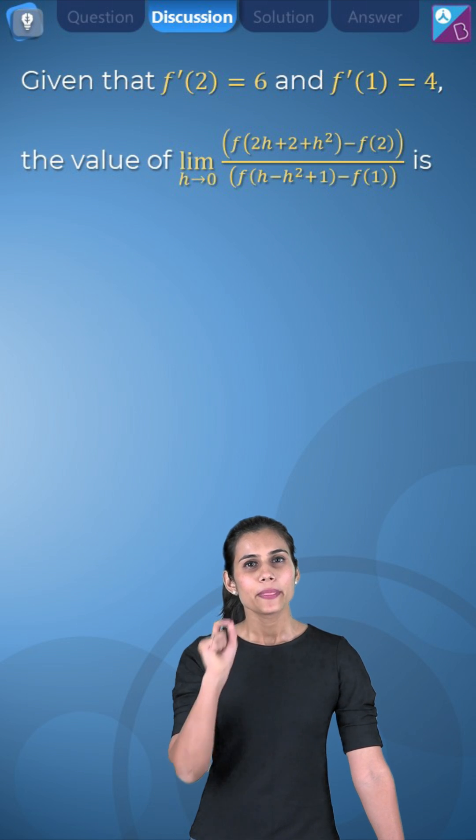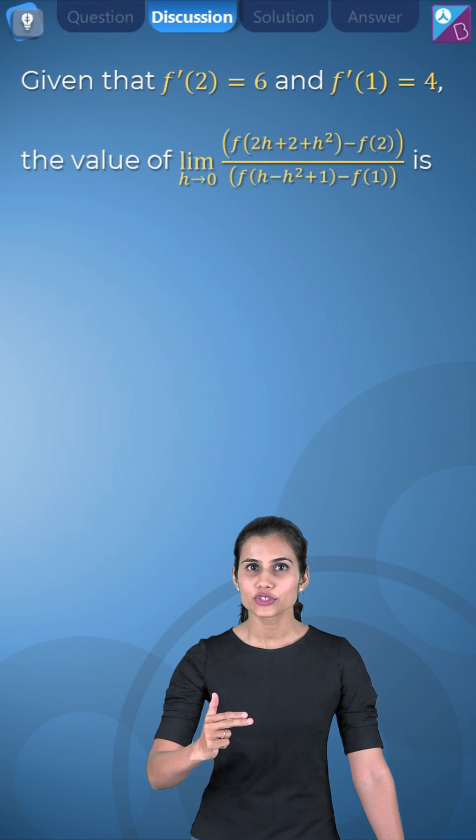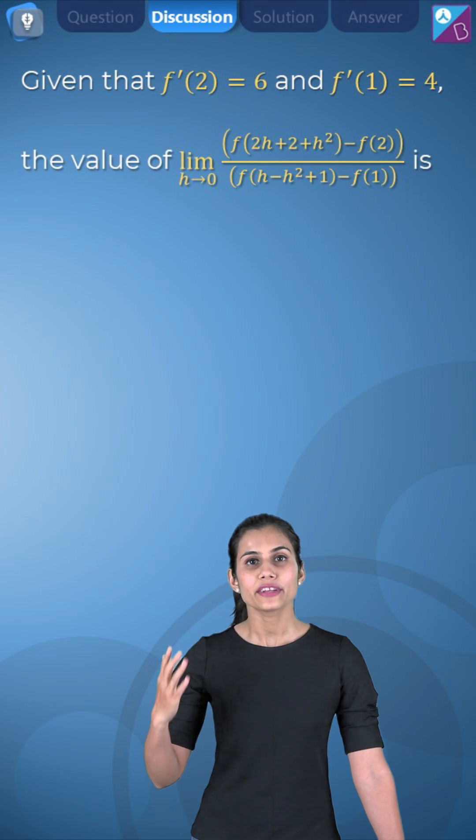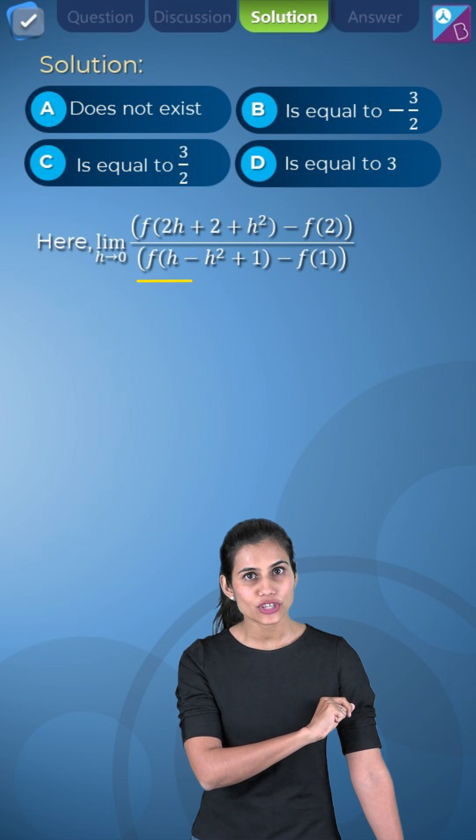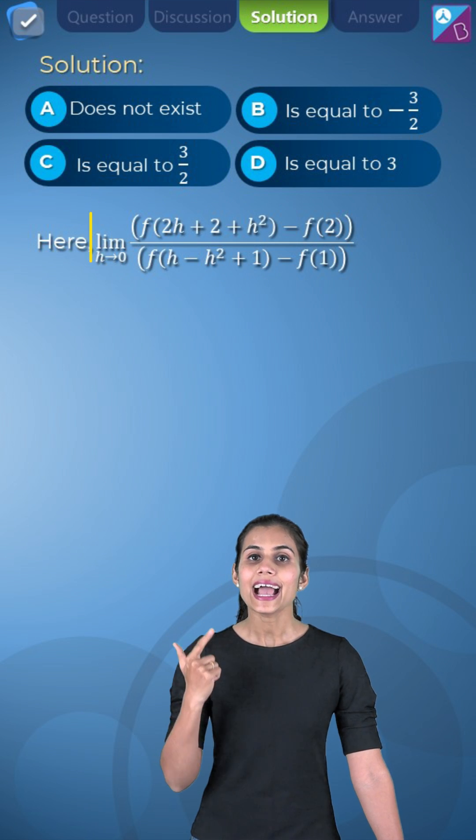Now we know as a matter of fact that the limit of quotient of two functions is the quotient of their individual limits. Using this idea, we will directly substitute the value of h as 0 in the numerator and the denominator.